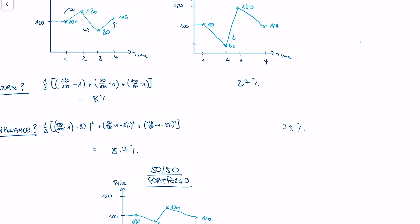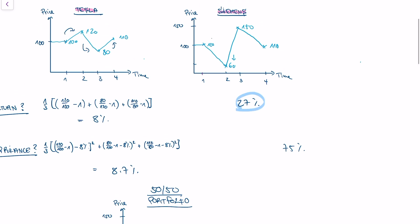So what do we see? We have two stocks. We have one stock with a higher average return, Siemens, but also with a higher variance.